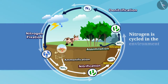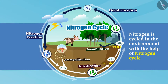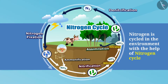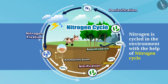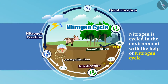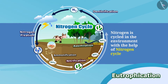Nitrogen is cycled in the environment with the help of the nitrogen cycle. The various stages include nitrogen fixation, nitrification, assimilation, ammonification, and denitrification. We also talked about eutrophication.